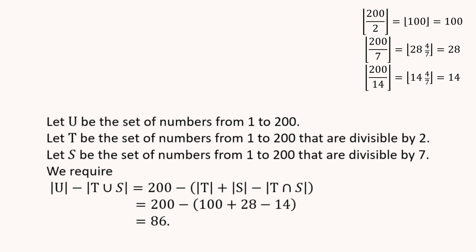So that's 200 minus, all in bracket, 100 plus 28 minus 14. That comes from those floors which I've got here. Those floor calculations. And that gives us 86.